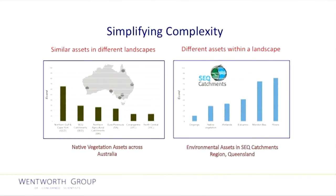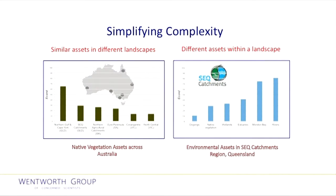The figure on the left shows the condition of native vegetation across six geographically and biologically distinctive regions across Australia. Each region has used different indicators relevant to their landscapes. The figure on the right displays the relative condition of six distinctly different environmental assets in the South East Queensland region — the population of dugongs in Moreton Bay, native vegetation, wetlands and estuaries — all described on one graph. This shows the importance of a headline index in simplifying complexity: the y-axis in every example is exactly the same, where 100 describes an asset in an undegraded condition and 0 when an asset no longer exists.